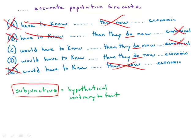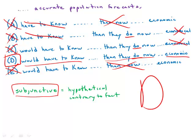So here that eliminates everything except answer choice D. Answer choice D, we have the correct subjunctive, we have the correct words following then—then they do now—and we have the correct word economic. So answer D is the only one that hits all the points correctly. It is by far the best answer choice.